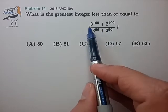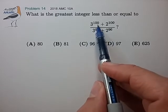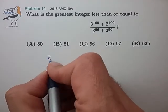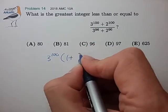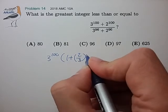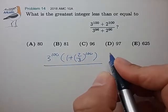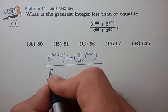So let's go ahead and do that. Let's factor out 3 to the 100th from the top and 3 to the 96 from the bottom.